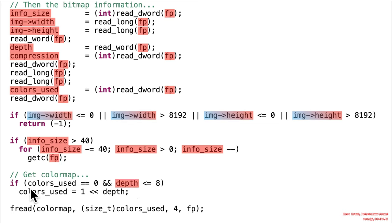Then we have another check that says if depth is less than or equal to 8 and colors used is exactly equal to 0, then it'll instead set colors used equal to 1 bit shifted to the left by depth number of bits. So basically, either way, if the attacker sets this to not 0, they get to completely control it. Otherwise, they can be essentially semi-controlled in that they can have however many bits they want to shift there.